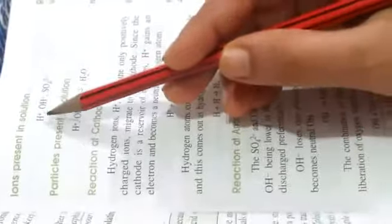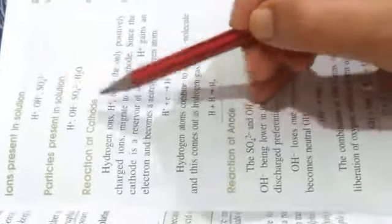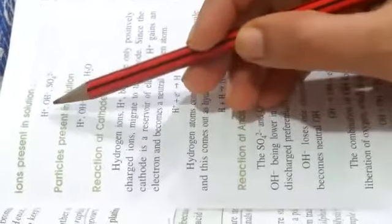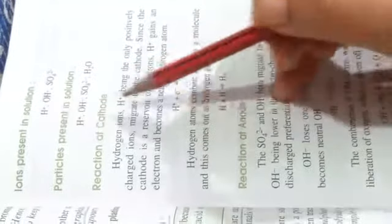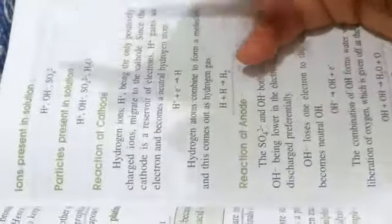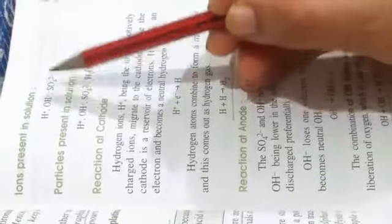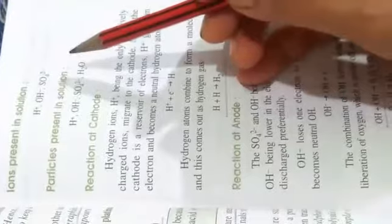Now, what will happen? These ions will move toward their respective electrodes. Now, what to understand is which ion will move toward which electrode. Here, we have only one positive ion and two negative ions. So definitely, the only positive ion, and that is hydrogen, will move toward the cathode. No doubt in that. Now, from hydroxyl and sulfate, which ion will move toward the anode? This thing we have to understand.